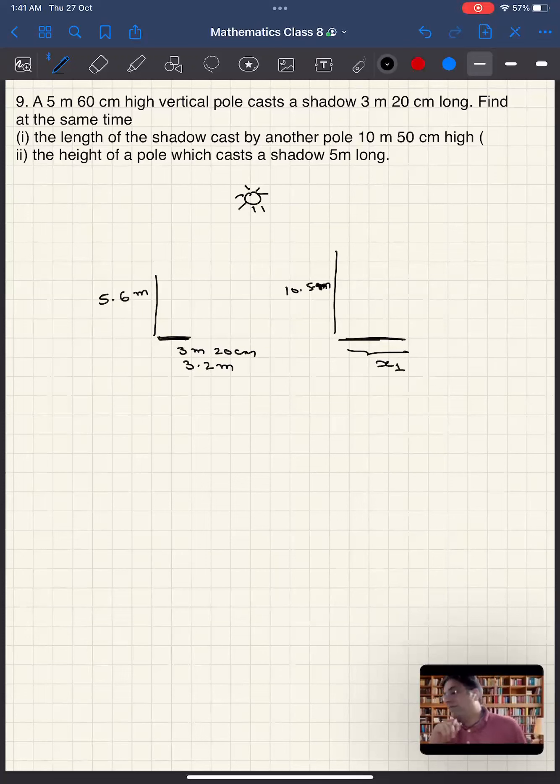So let's see how to solve this problem. Again, it is a problem of direct proportion. Longer the length of the pole, the longer will be the shadow. Shorter the length of the pole, the shorter would be the shadow. So if it was 5.6 meters, then the shadow was 3.2 meters. If the length of the pole is 10.5 meters, what is the length of the shadow? Let's call it x1.